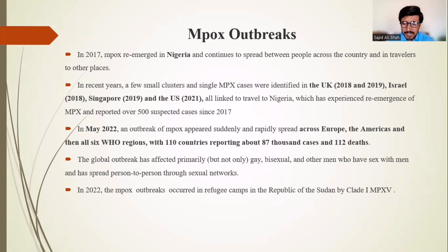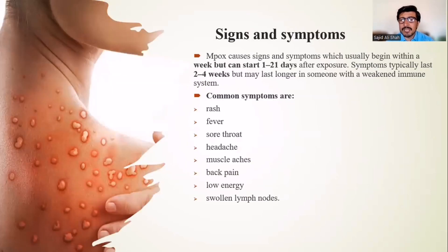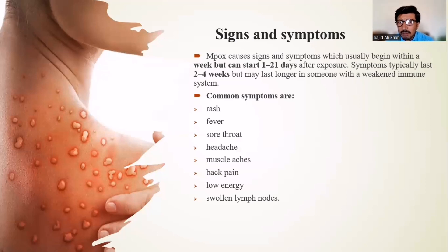Signs and symptoms of mpox usually begin within a week but can start from 1 to 21 days after exposure to the virus. Symptoms typically last two to four weeks but may last longer in someone with a weakened immune system. Common symptoms include rash, fever, sore throat, headache, muscle aches, back pain, low energy, and swollen lymph nodes.